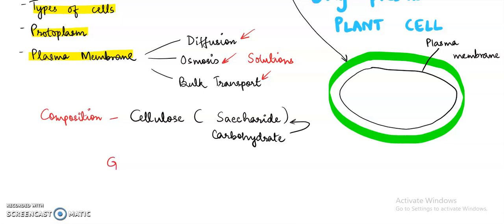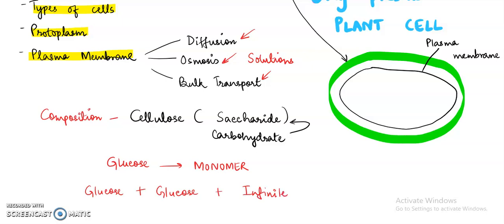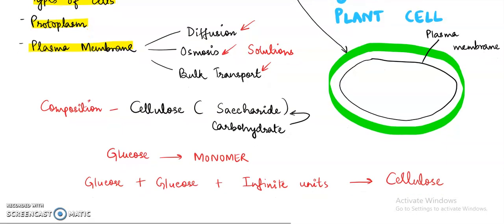How is cellulose made? You must know glucose — glucose is the smallest molecule, that is why we call it a monomer. When many units of glucose — infinite units — are added together, it results in the formation of cellulose. Because glucose is a carbohydrate, cellulose will also be a carbohydrate. So cell wall forms the outermost boundary of the plant cell and is made up of cellulose.